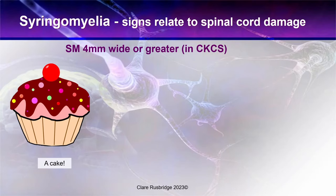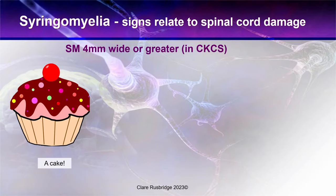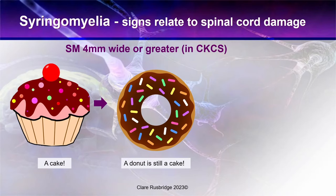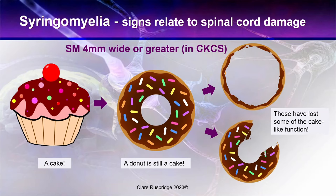Syringomyelia relates to spinal cord damage, and the way I describe this is to imagine that the spinal cord is a cake — fulfilling all its cake-like functions, full of calories, full of deliciousness. Now if I put a simple hole in this cake and make it a doughnut, it's still a cake and still fulfils a lot of cake-like functions. This really describes a mild syringomyelia — where there's a small cavity within the spinal cord or a small central canal dilatation — but otherwise the dog is completely normal. What we call an asymptomatic syringomyelia. However, if that damage perpetuates and gets much bigger, there will be significant loss of the cake and significant loss of cake-like function.